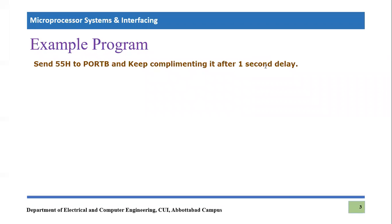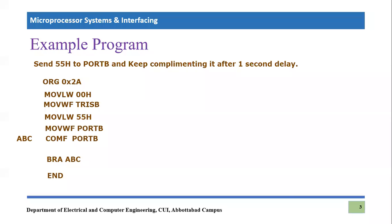Let's see an example program using call and subroutine. The task is: send 0x55 to Port B — Port B will be considered as our output port — and keep complementing it. Whatever data we send, which is 0x55 to Port B, we want to complement it after a one-second delay. Let me write the code so we can analyze it. This is the code written for this purpose — let's see how it works.